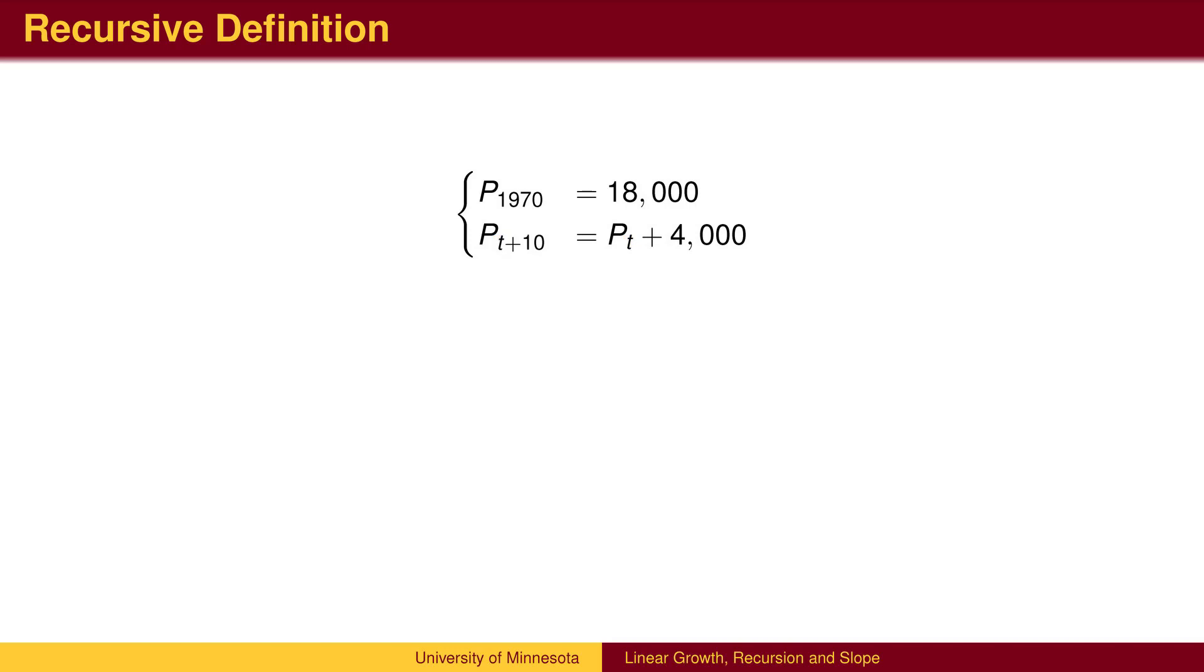We need one equation which specifies the starting condition, in this case the population in 1970, and a second equation that tells us how to calculate the population after 1970.